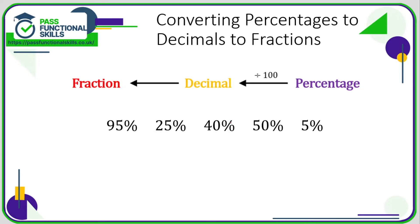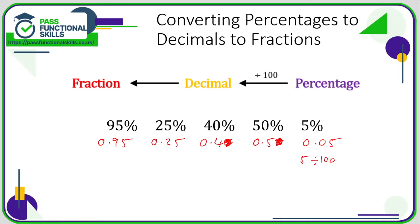Now going backwards: to convert a percentage to a decimal, since we multiplied by 100 going the other way, we now divide by 100. So 95% is 0.95, 25% is 0.25. You can see a pattern — it's essentially placing a decimal point. 40% is 0.4, not 0.40 since that trailing zero adds nothing. 50% is 0.5. We do need to be careful with 5% — many people say it's 0.5, but 50% was 0.5; 5% is 0.05. Type 5 divided by 100 into a calculator and you'll see it's 0.05.